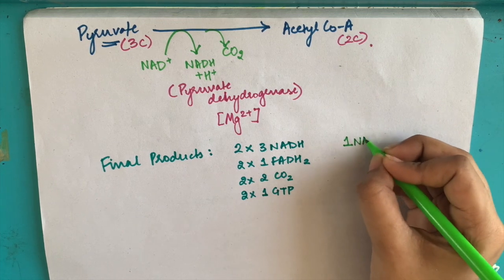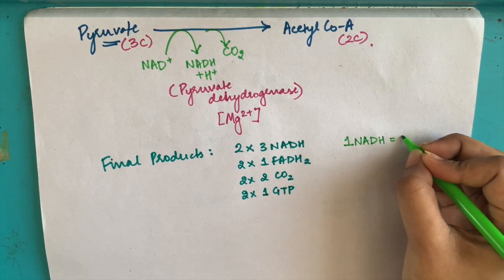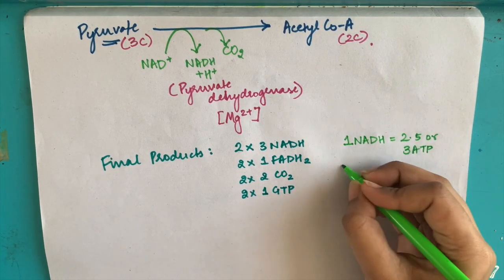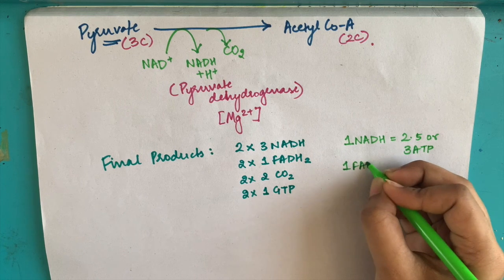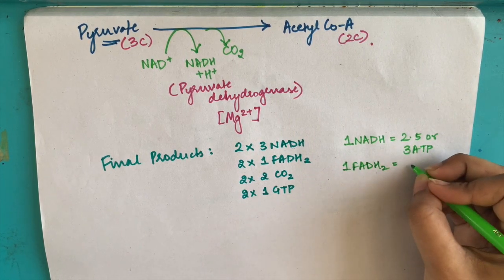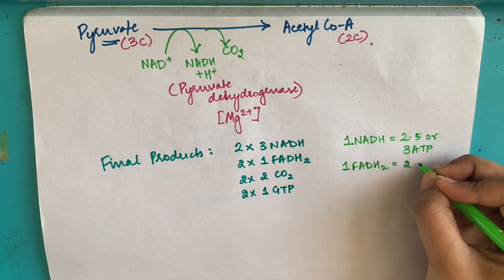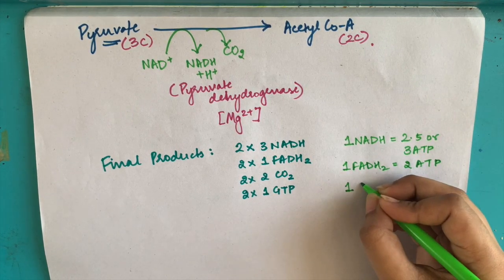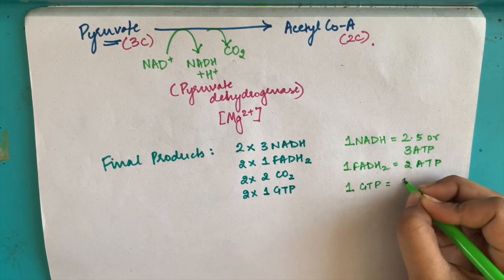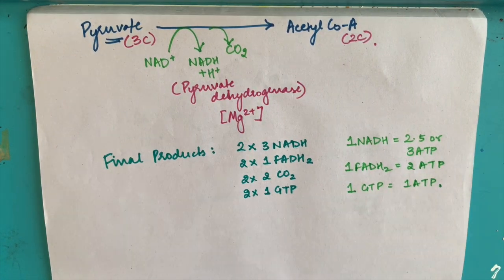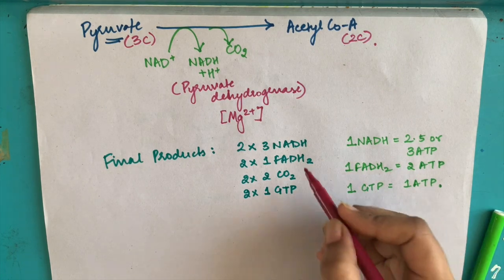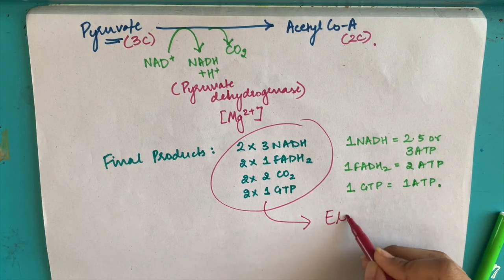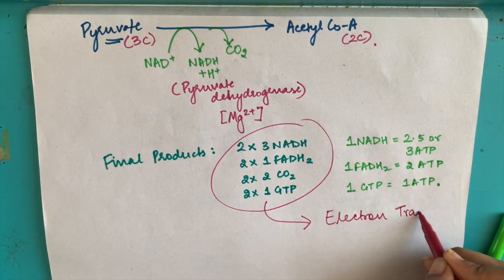The significance of these are that one NADH is basically equal to 2.5 or an estimate of 3 ATP, and one FADH2 is equal to 2 ATP, and one GTP is also equal to 1 ATP. This signifies that these molecules, when taken into the electron transport chain, produce these many number of ATP as a result.